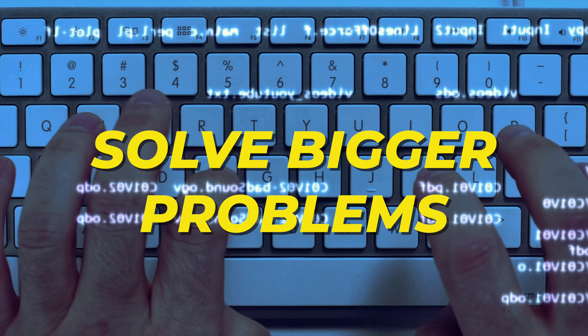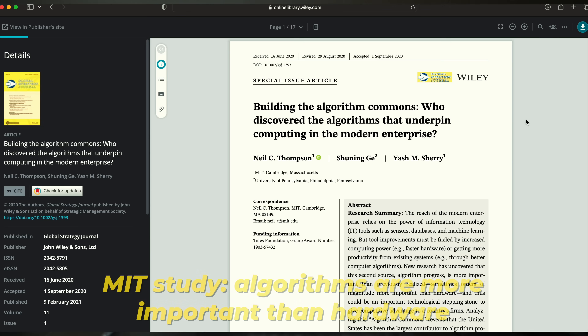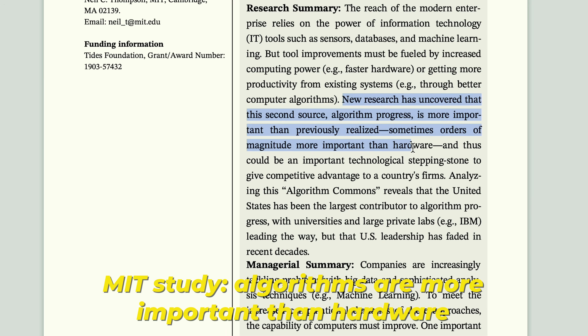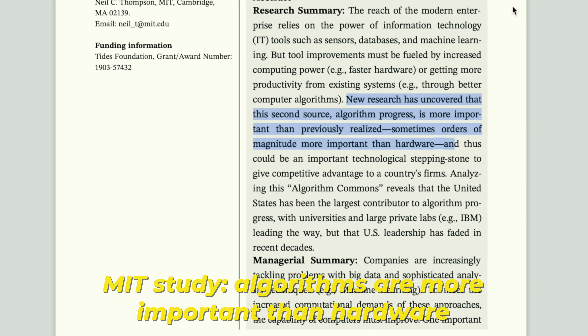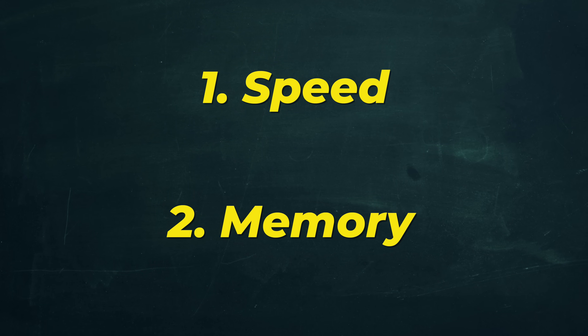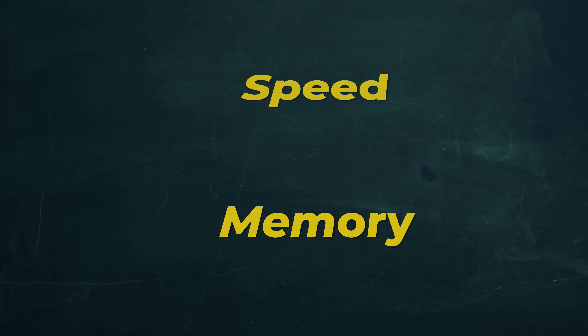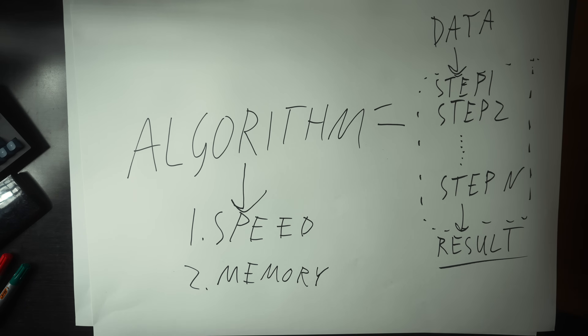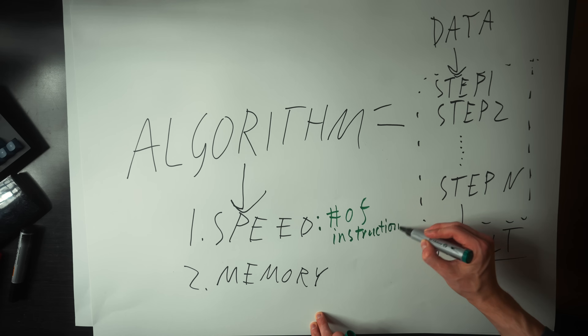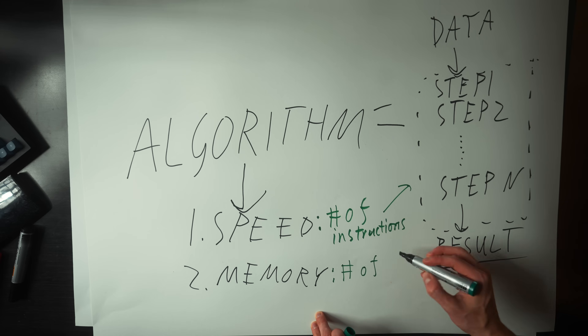Simply by designing a faster algorithm, we can number one, solve much bigger problems, and number two, literally achieve the same performance gains as a decade worth of computer processor speed improvement. In general, the things we care about with algorithms are the speed at which they run and the memory they use. At the very low level, we can think of the speed of an algorithm as how many instructions it has to complete. If we can design an algorithm to do the same thing in 10 instructions versus 100 instructions, the one using 10 is going to be faster.